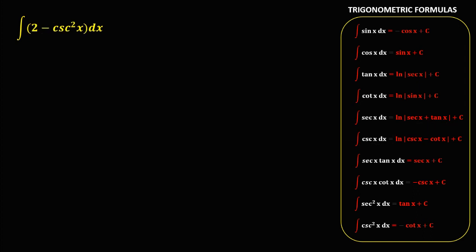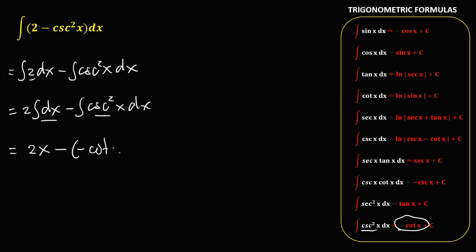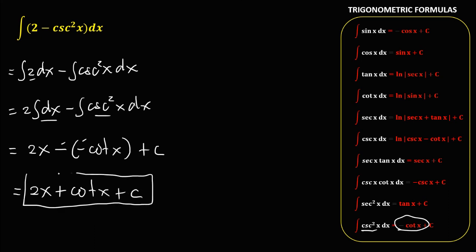For this given, integrate every term. We have the integral of 2 dx minus the integral of cosecant squared x dx. We can put the constant outside: 2 times the integral of dx, minus the integral of cosecant squared x dx. Since the integral of dx is x, we have 2x minus the integral of cosecant squared x, which is negative cotangent x, plus c. Simplifying: 2x plus cotangent x plus c. So this is the final answer.